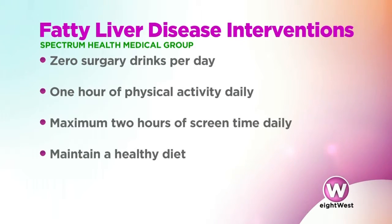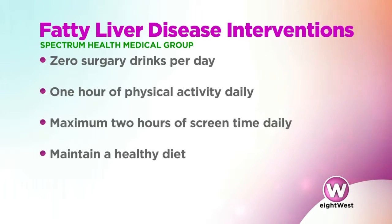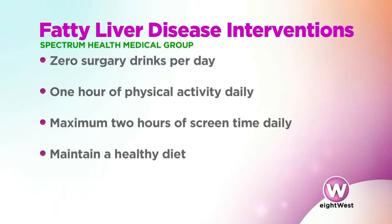The good news is, if caught early, there are great ways to help reverse this disease. The focus is on healthy lifestyle interventions. With children these days, I like to focus on the Zero One Two approach. Zero means zero servings of sugary beverages per day — and this isn't just soda and juice; it includes things like Gatorade, which many people think is healthy but really isn't.